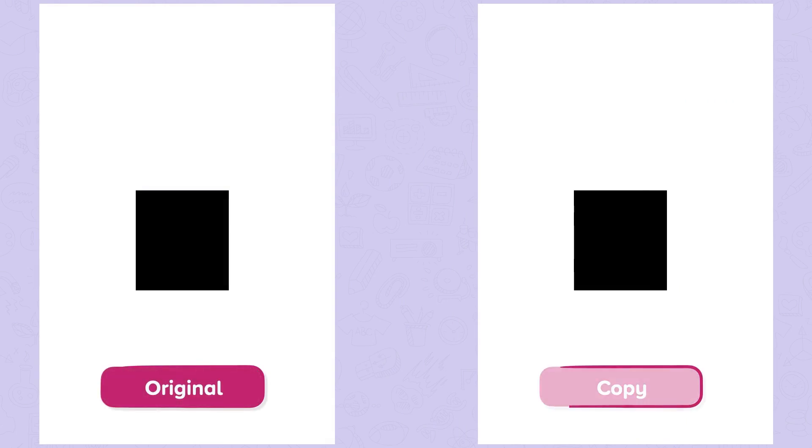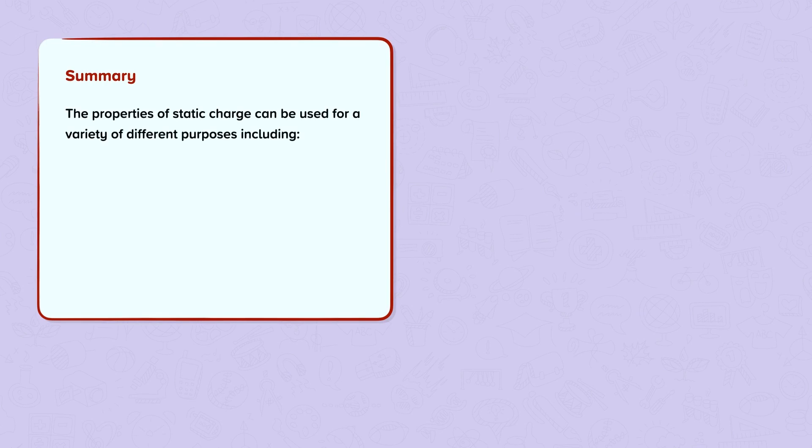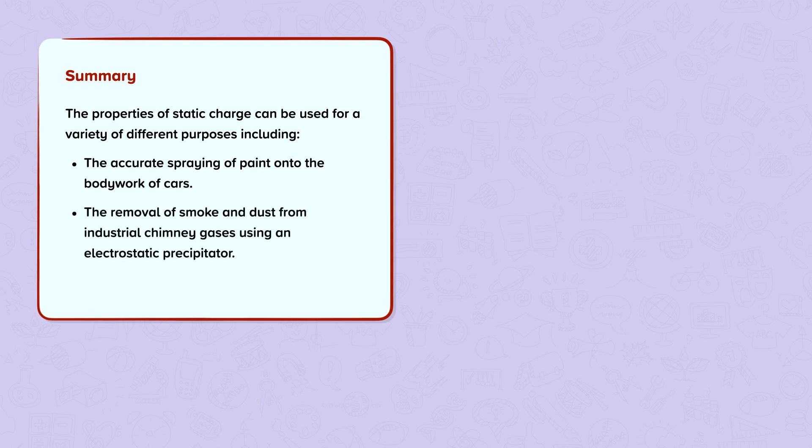If we flip this piece of paper over, this is a copy of the original image. Summary: the properties of static charge can be used for a variety of different purposes, including the accurate spraying of paint onto the bodywork of cars, the removal of smoke and dust from industrial chimney gases using an electrostatic precipitator, and photocopying.